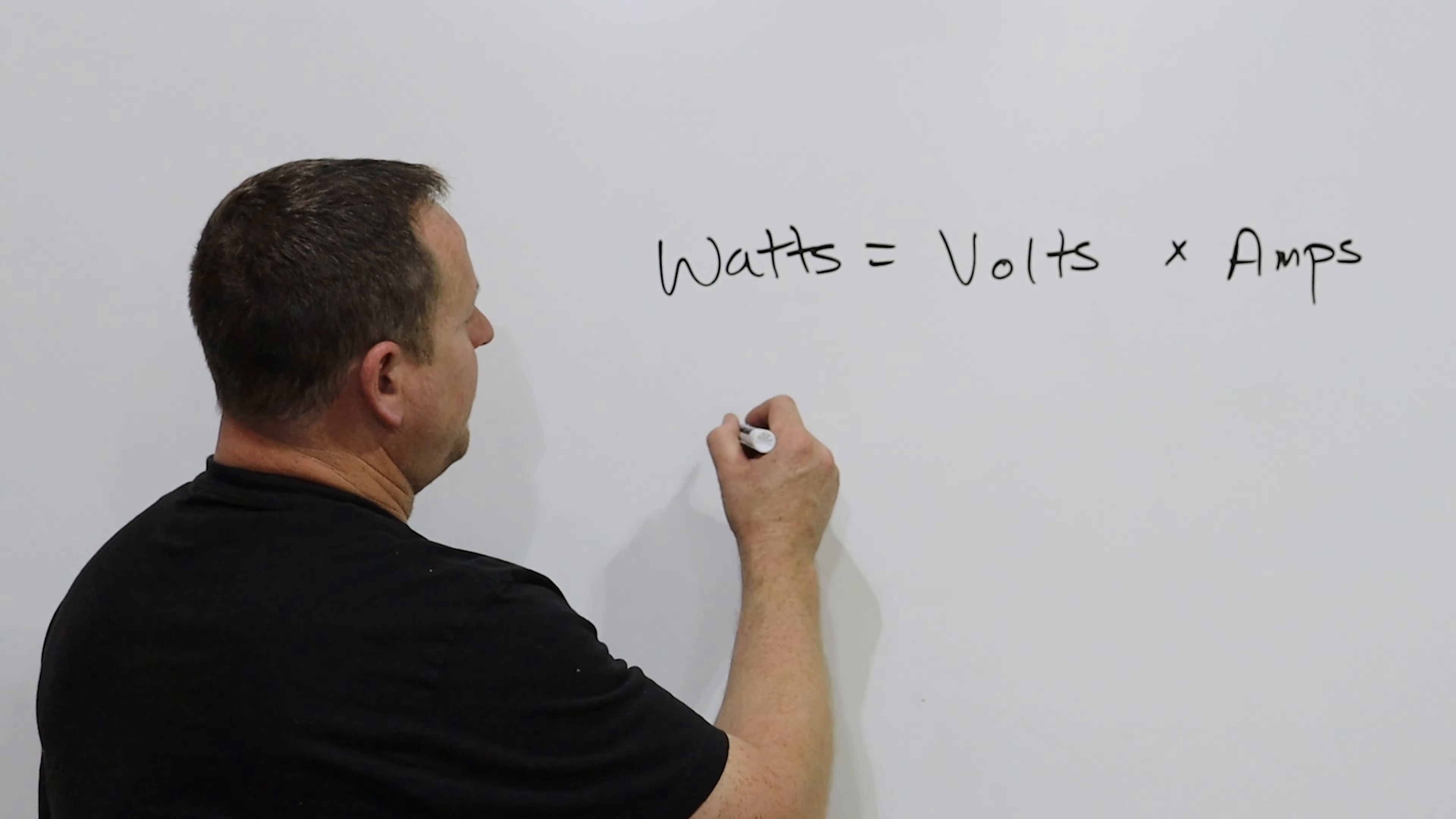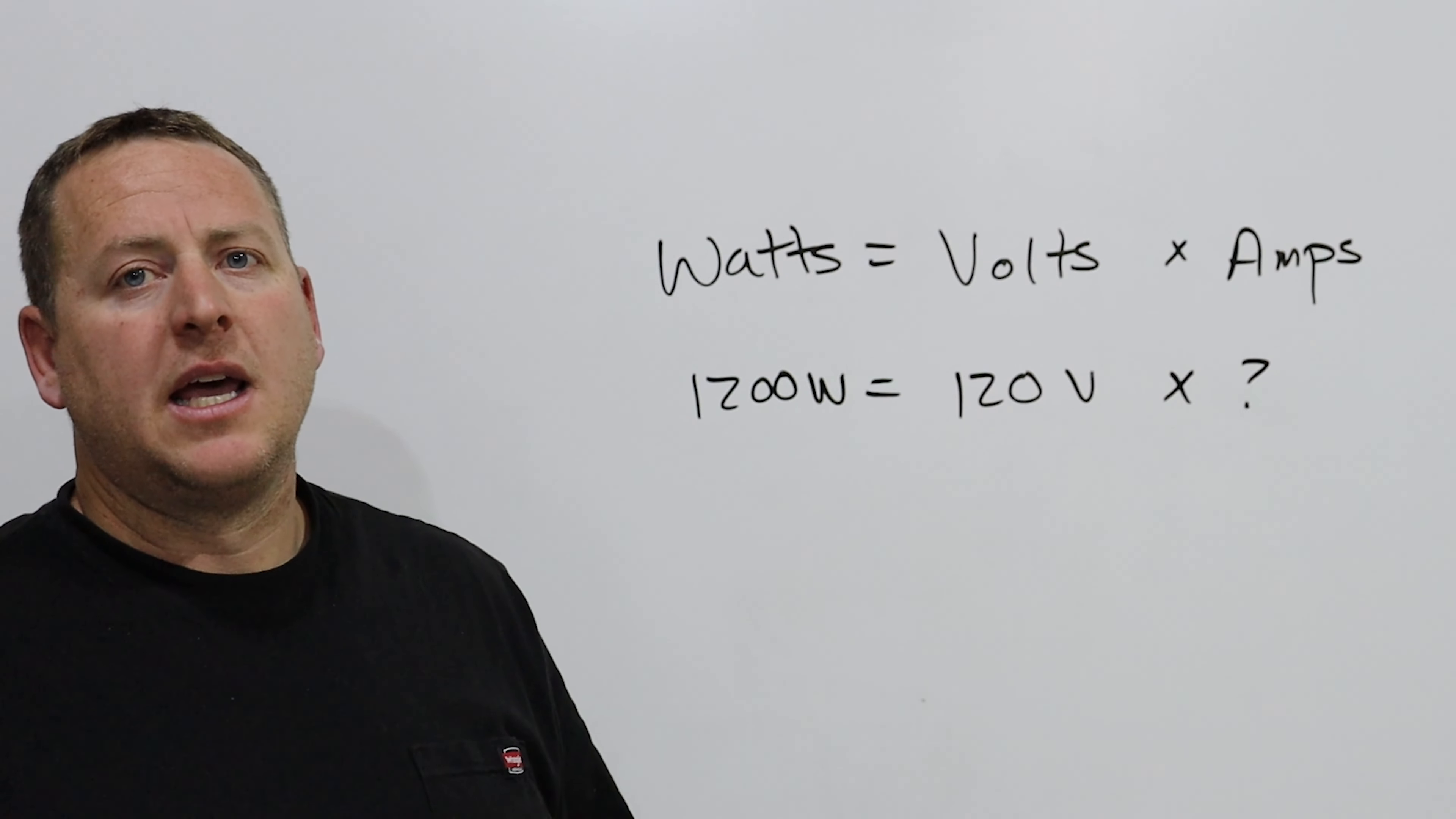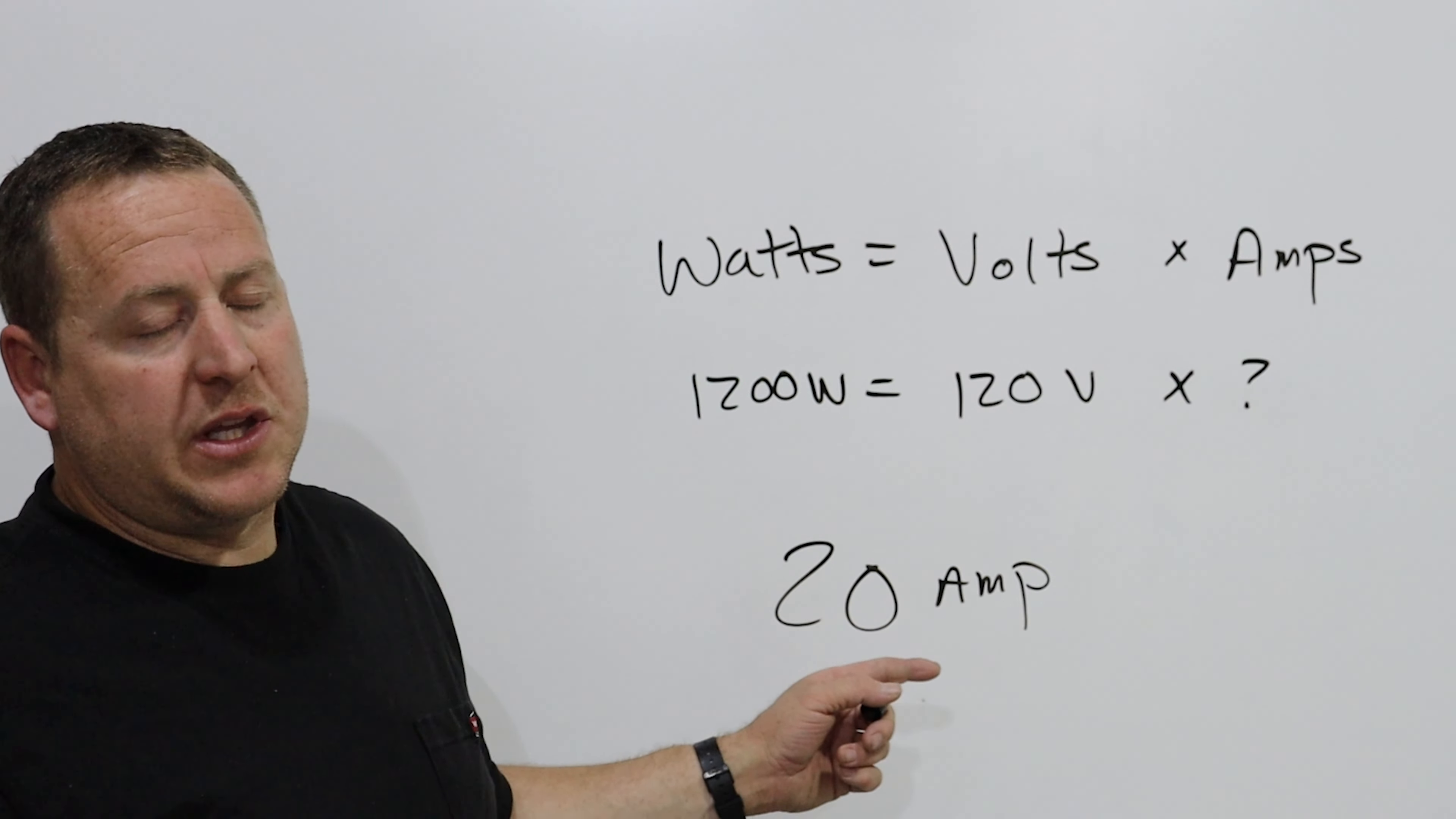If we have 1200 watts, we know the voltage is 120 volts because we're using a 120 volt circuit in our home. Now we need to figure out how many amps we're going to run. Why this is important: I talked about a 20 amp circuit, and obviously we don't want to draw more amps than our circuit is capable of carrying.